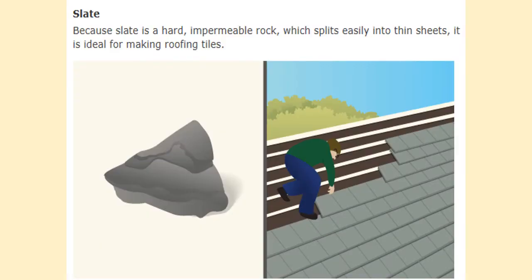Slate is a type of metamorphic rock. Slate is very hard and it is impermeable, which means water cannot get through it. Another good property of slate is that it can be split easily into thin sheets, which makes it ideal for making roof tiles — because it's hard it won't break easily, it's impermeable so water won't get through it and your roof shouldn't leak, and it can be split into thin sheets which is exactly the shape we would want for roof tiles.